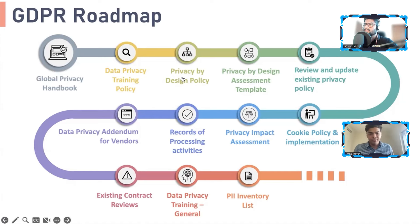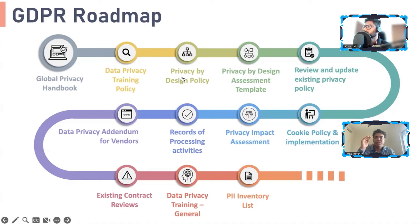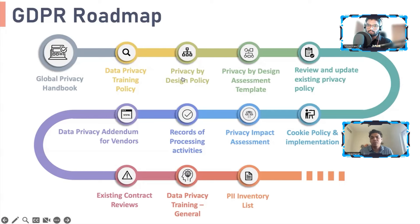After the records of processing activity, you build a PII inventory list. When I worked with PCS, they had more than 120 personal attributes they were using, and they took really good care managing them because they had a clear understanding of how things were structured.